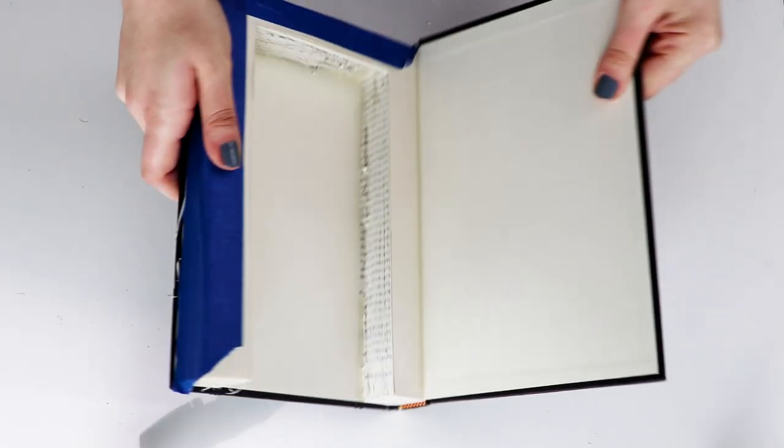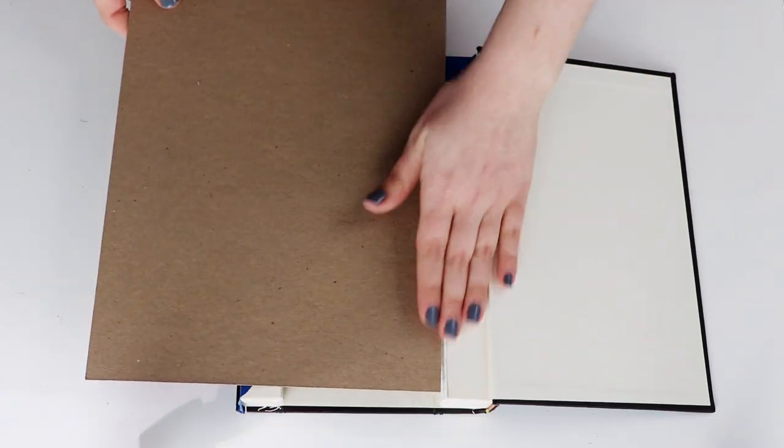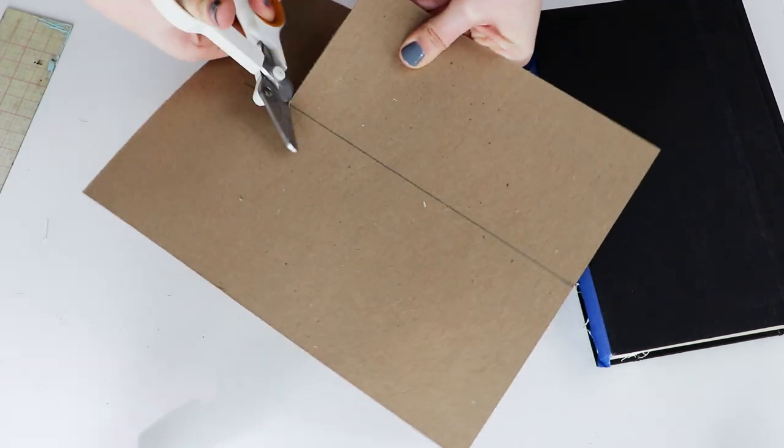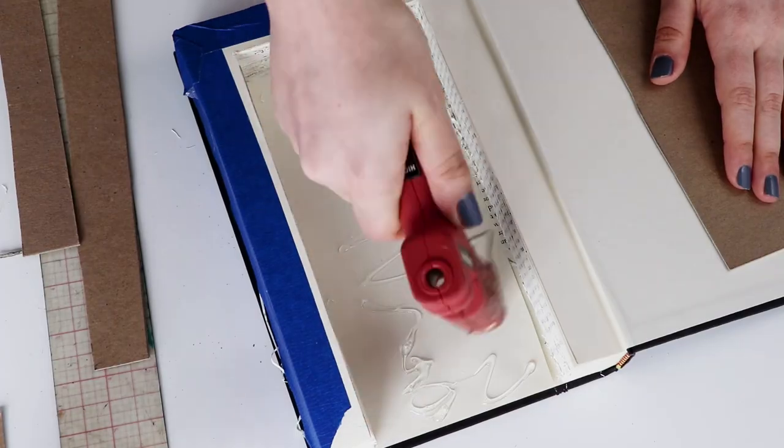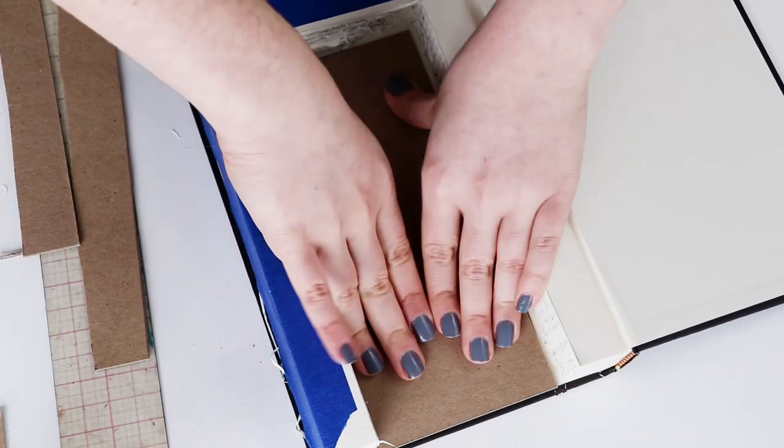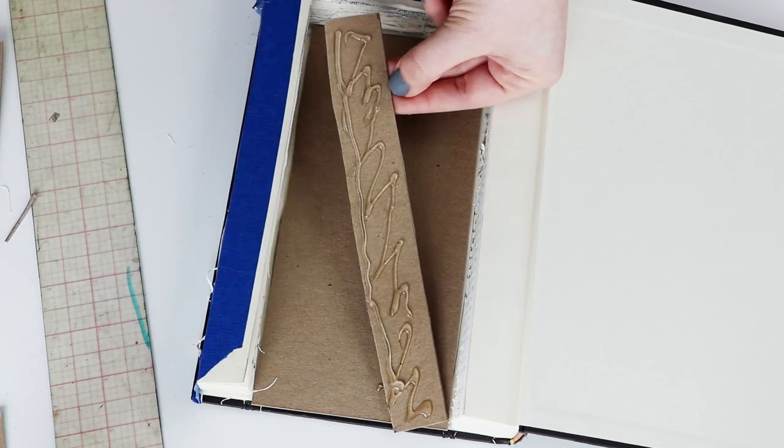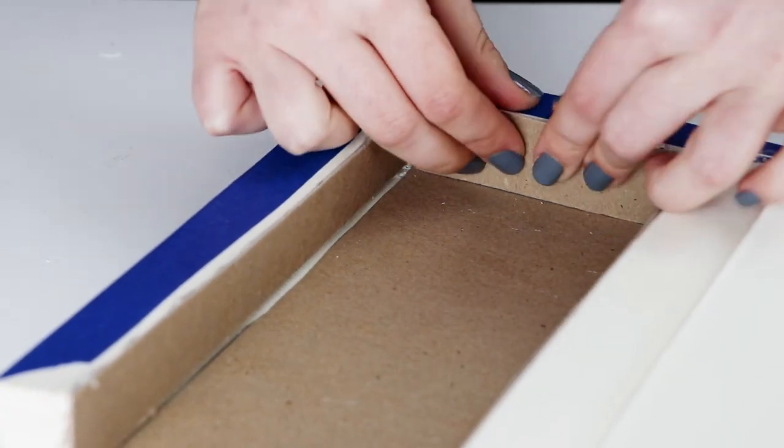Alright, so once your book pages are cut out, we're going to line the inside with cardboard. You can cut apart a cereal box or use any cardboard that you have lying around. Cut down pieces of cardboard to fit in the box and then use hot glue to glue them in place. Don't be stingy with the hot glue here, you really want to make sure the cardboard is holding all of the pages together.